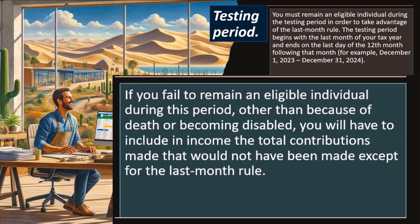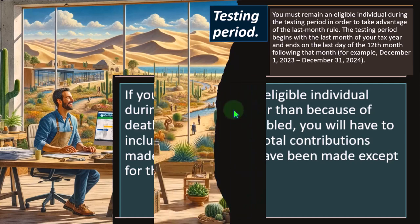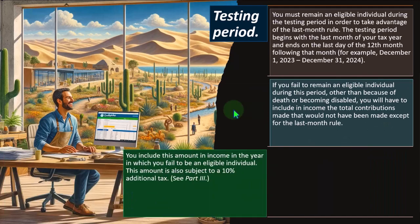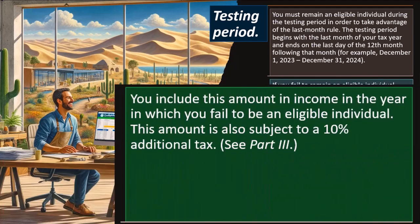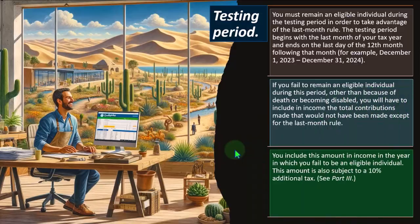Any contribution that would not have been made except for the last month rule must be included in income in the year in which you fail to be an eligible individual. This amount is also subject to a 10% additional tax.